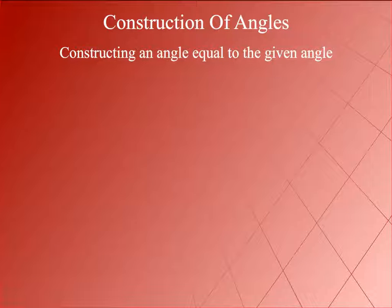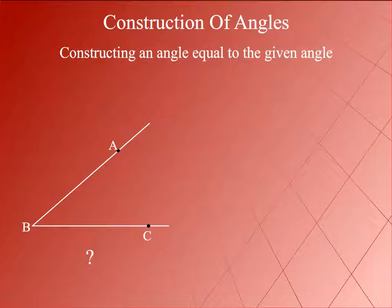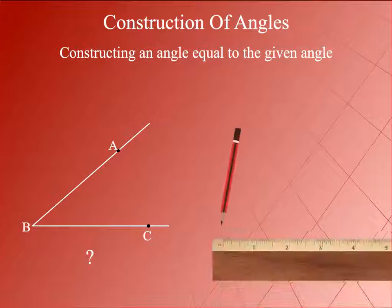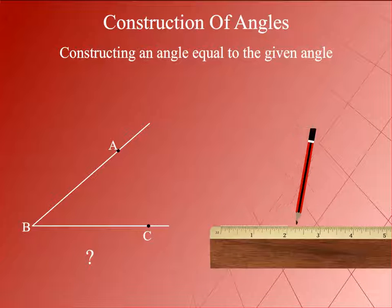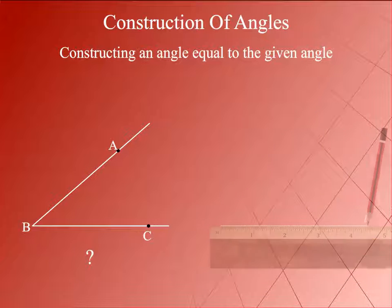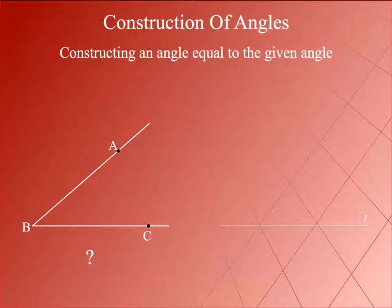Constructing an angle equal to the given angle. Let ABC be an angle whose measure is not known. Draw a line L and mark a point P on it, as shown here.